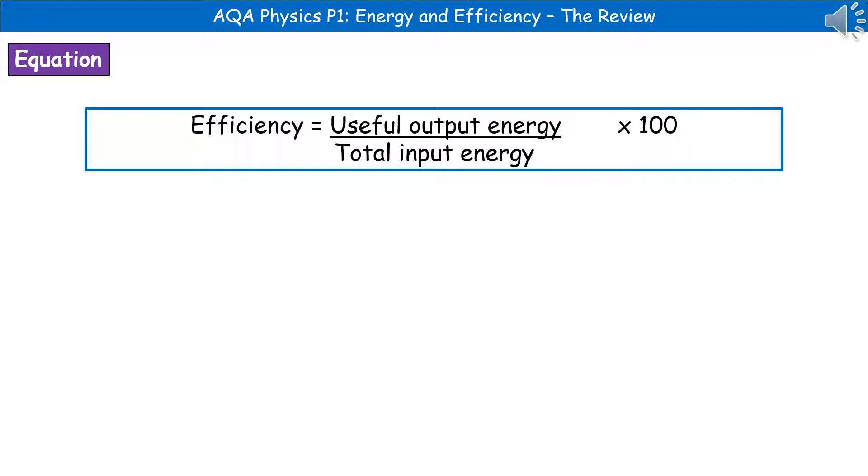The next equation we need to know is the one for efficiency. So if you're asked to calculate the efficiency of an object, then what you need to do is the useful output energy divided by the total input energy and then times that by 100 to give it as a percentage. Now, you don't always have to give it as a percentage. You can give it as a decimal, but just double check what the question says before writing your answer.